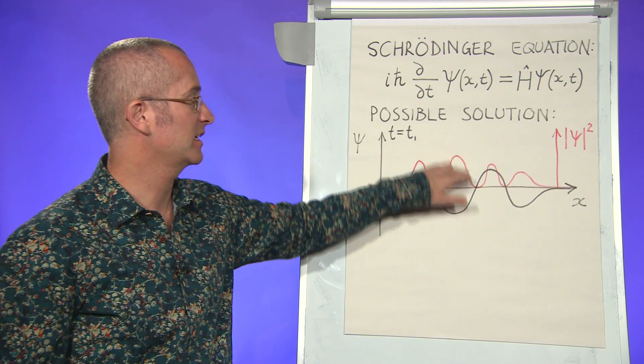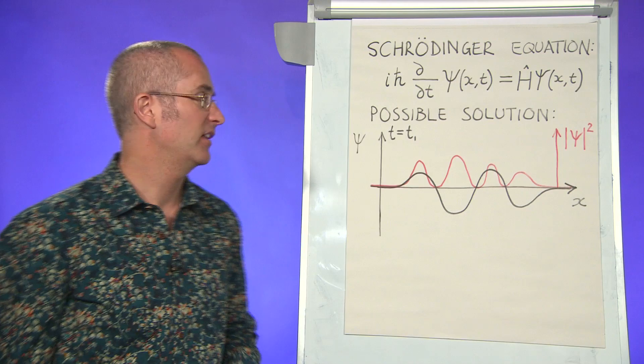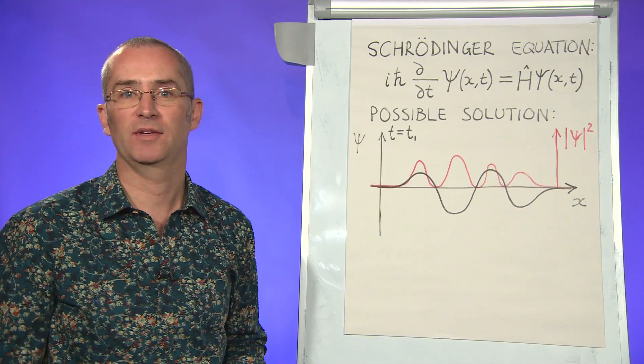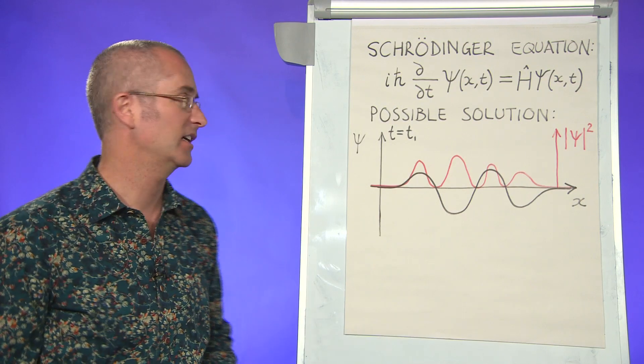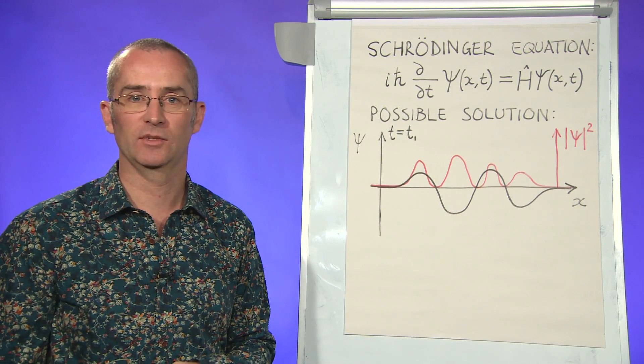But it turns out if you square this wave function, getting something like this red line, then that is actually proportional to the probability of measuring this particle to be in one of these positions here at this time. So that's its connection to the real world.